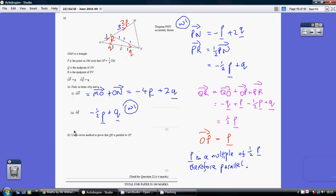Now for part B: use the vector method to prove that QR is parallel to OP. Well, OP we know is p. So I need to work out what QR is and see that it's a multiple of p, with no q's involved. Let's work out what QR is.